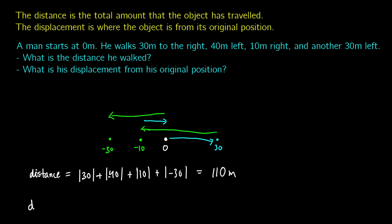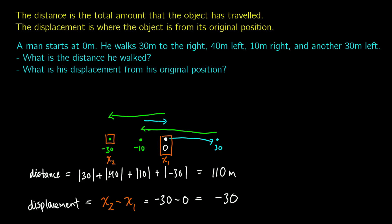Now for displacement, we're going to take a look at the final position — let's call this x2 — and the start position, x1, and just take the difference between those. So this will be x2 minus x1, the final point minus the starting point. So we get negative 30 minus 0, which is equal to negative 30 meters.